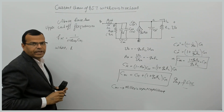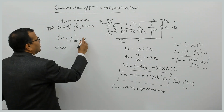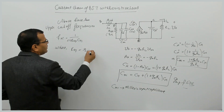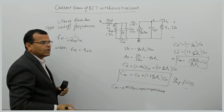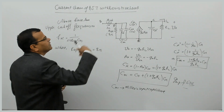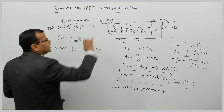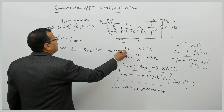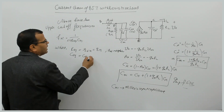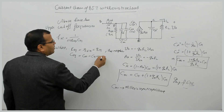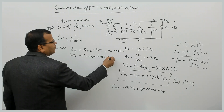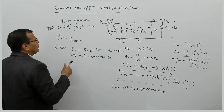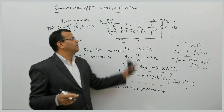For the input side, what is the equivalent resistance? The equivalent resistance R_eq is simply R_B-dash-E, which equals R_pi. Note that R_B-dash is neglected here. The equivalent capacitance C_eq is Cmi, which equals C_pi plus (1 plus gm times RL) times C_mu. This is the input capacitance, and substituting these gives the first cutoff frequency due to the input capacitance.